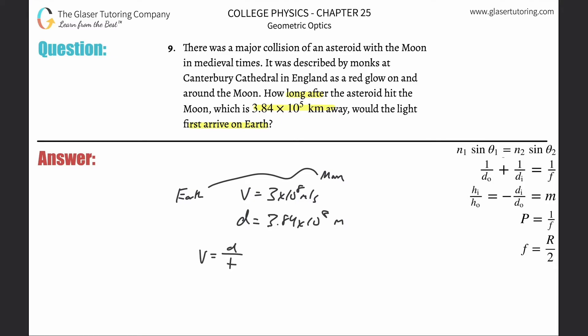Now all you got to do is solve for time. Velocity equals distance over time. Cross multiply. There's going to be 3.84 × 10^8 divided by 3 × 10^8. The 10^8 cancels, so it's 3.84 over 3, which is about 1.28 seconds.